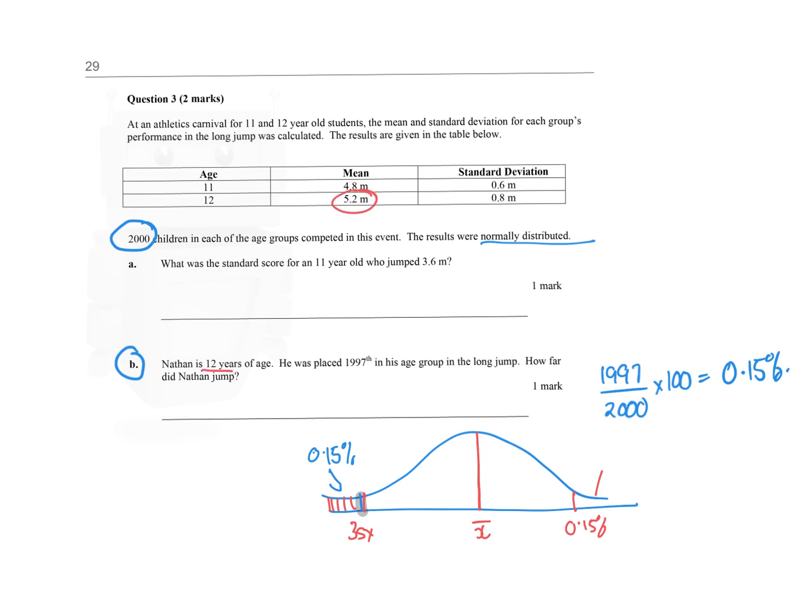so the mean was 5.2, and the standard deviation is 0.8. So you're going to add 0.8 three times, or take away, sorry, I should say.